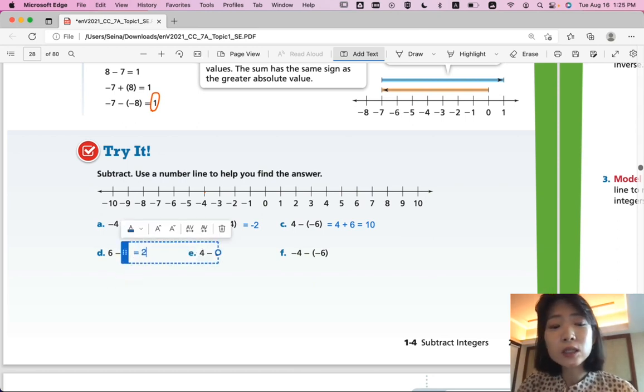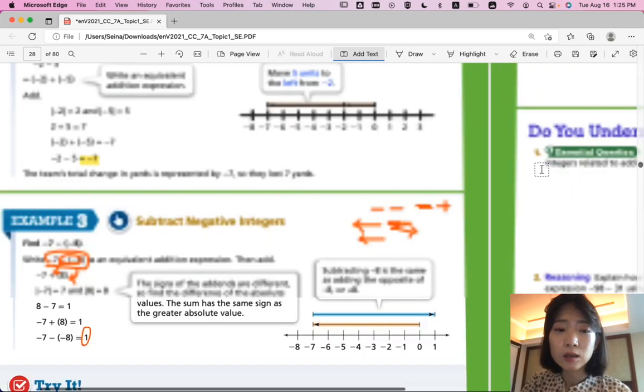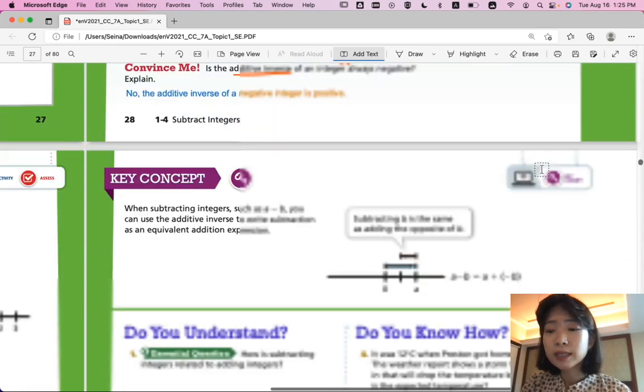Part D. 6 minus 4 is 2. Part E. 4 minus 6 is negative 2. Part F. Negative 4 minus negative 6 should be positive 2. Check your answers. See if you got everything correct. If you did, great job. You got this lesson correctly. So, let's summarize our lesson.